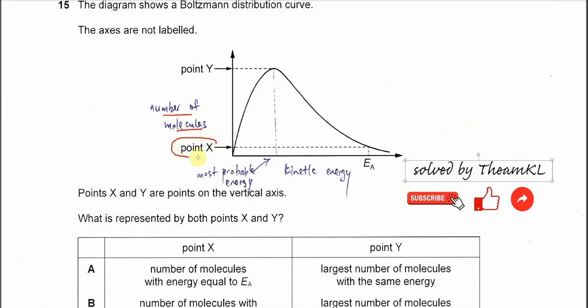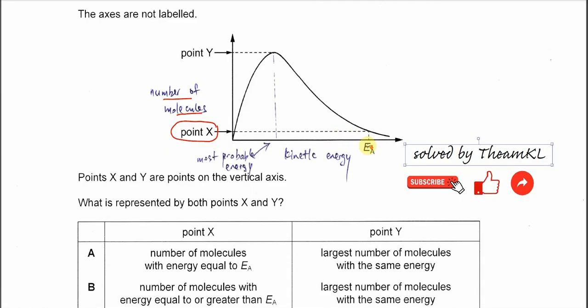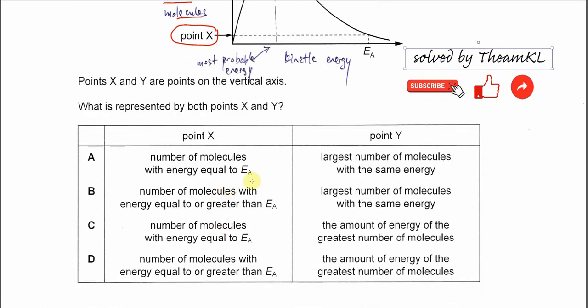So let's check what point X is. X is the number of molecules, and we can check here. It's the number of molecules with Ea, so that's why the answer is just A or C.